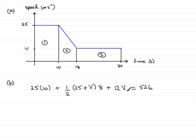So all that's left to do is solve it for V. What I noticed here is I could cancel this 2 into the 8, which goes 4 times. And then all I need to do is multiply this out. So we have 250 here for 25 times 10, we've got 4 times the bracket, so we've got 4 times 25 is 100, and then plus 4V, plus the 12V here equals 526.